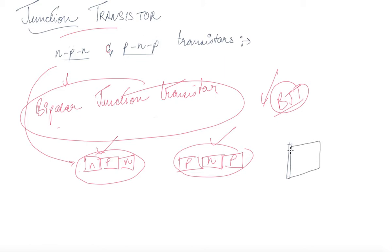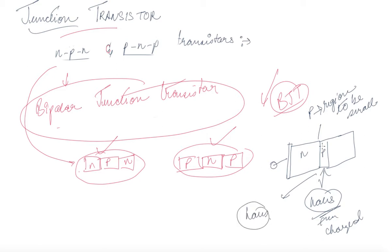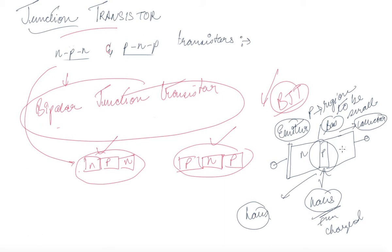Looking at the structure: here is N, then N, a junction has been created, then P, then N again — this is your P region. The P region is taken to be small. What P actually does is supply holes; it is positively charged. We take the quantity of holes to be small. This region is called the emitter, the middle part is called the base, and the third part is your collector.